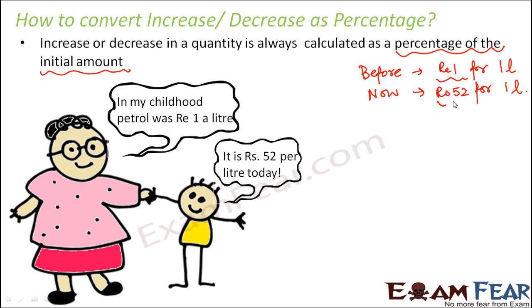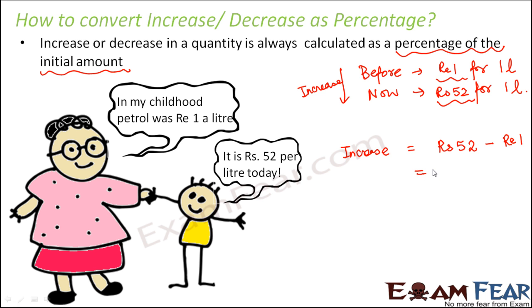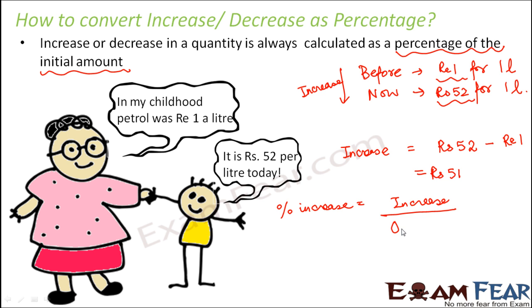The price has increased from rupees 1 to rupees 52. So there is an increase in the quantity. How do we represent this increase in percentage? First, we need to find how much is the increase — the difference between the two values: rupees 52 minus rupee 1, which equals rupees 51. To express this as a percentage increase, it equals the actual increase divided by the original initial price, multiplied by 100%.